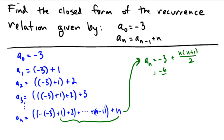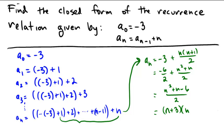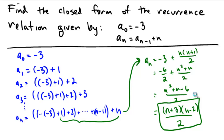So it looks like that's a negative 6 over 2, and this would be n squared plus n over 2. So we get n squared plus n minus 6 over 2, and we can simplify that a little bit further into n plus 3 times n minus 2 over 2. So we have a closed form of (n+3)(n-2)/2 for this particular recurrence relation.